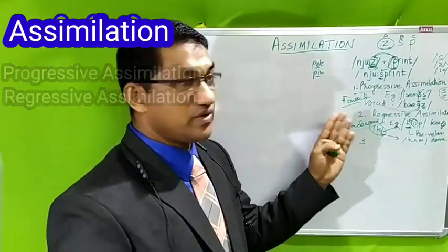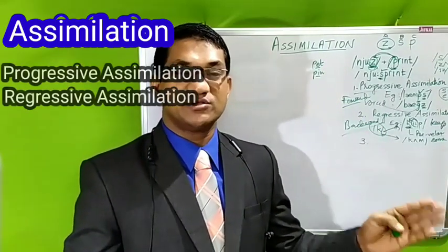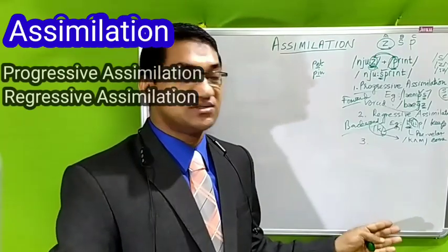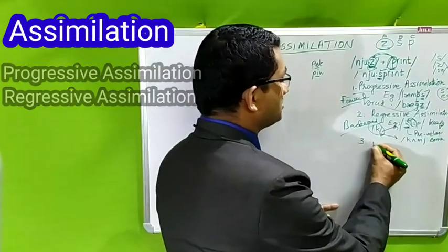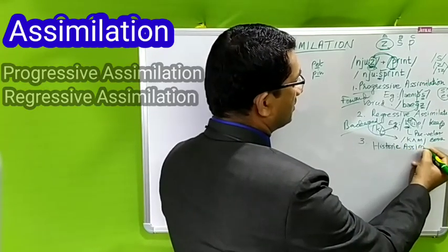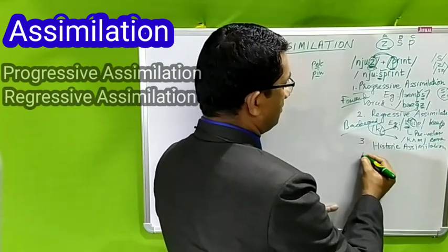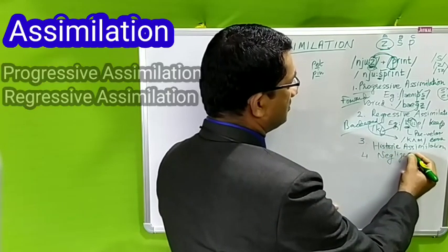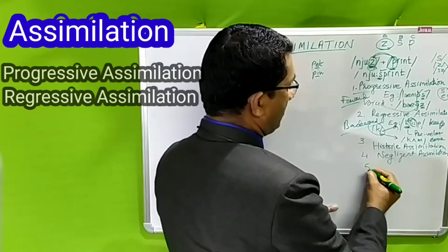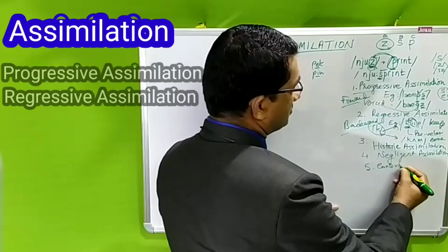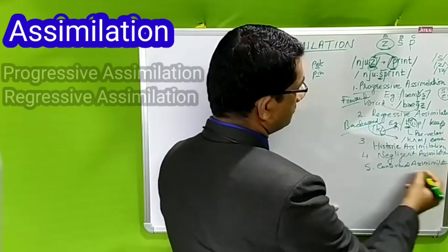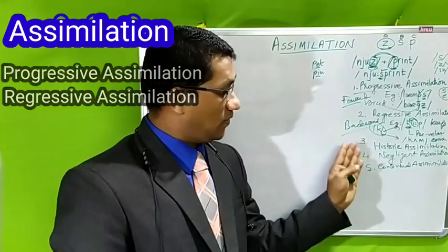With this, we have clearly understood what is assimilation, what is progressive assimilation, and what is regressive assimilation. We have three more concepts to discuss: historic assimilation, negligent assimilation, and contextual assimilation. We are going to discuss all three right now.